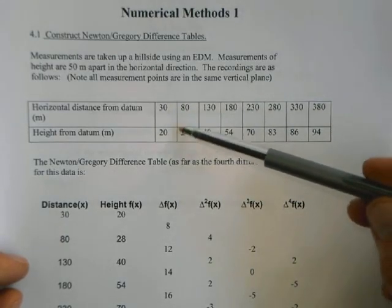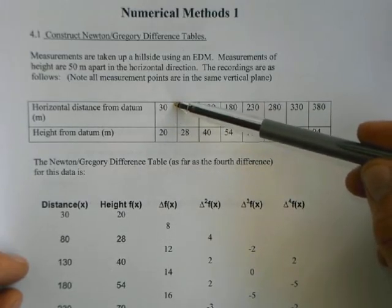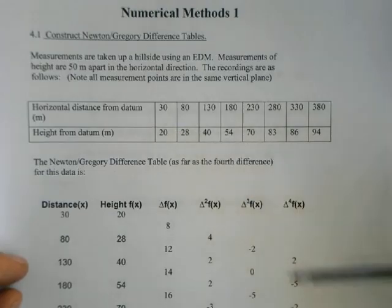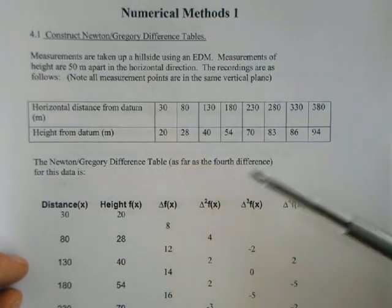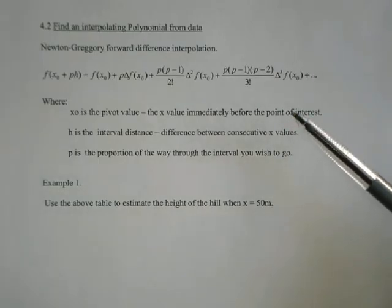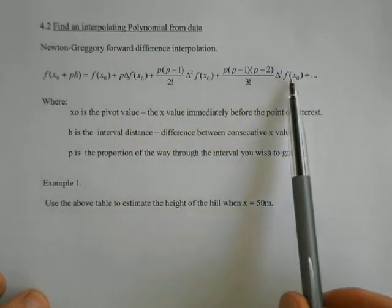Now what we want to be able to do is to interpolate between these points. So we know the actual height at 30 meters and the actual height at 80 meters. But what's happening if the distance was 50 meters, what would the height be? We want to be able to work out those in between points with better than just a linear approximation. So we can create an interpolating polynomial which goes to the difference that we require.